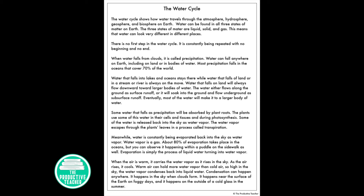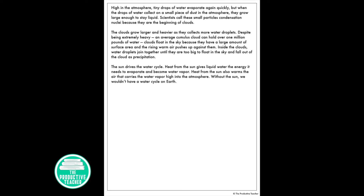Condensation can happen anywhere. It happens in the sky when clouds form, it happens near the surface of the earth on foggy days, and it happens on the outside of a cold glass in the summer. High in the atmosphere, tiny drops of water evaporate again quickly, but when the drops of water collect on small pieces of dust in the atmosphere, they grow large enough to stay liquid.